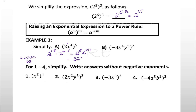For part b, we distribute the exponent 2 over (-3x⁴y⁵). It becomes negative 3 to the second, x to the 4 times 2, and y to the 5 times 2. Negative 3 squared is negative 3 times negative 3, which is positive 9. So the result is 9x to the 8th and y to the 10th.